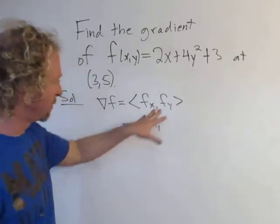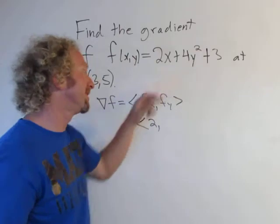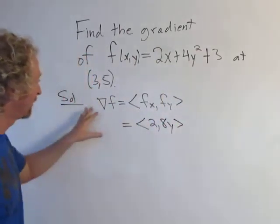And in this case the partial with respect to y, well this is 0 and this is 0, so we have 4y². The derivative is 2 times 4, which is 8y. So that's the gradient of f.